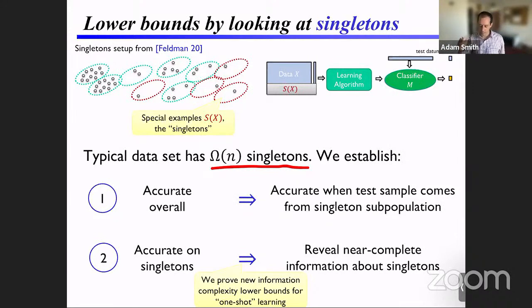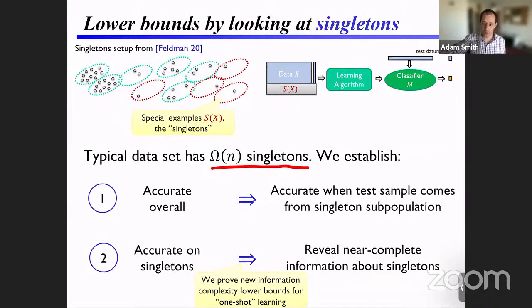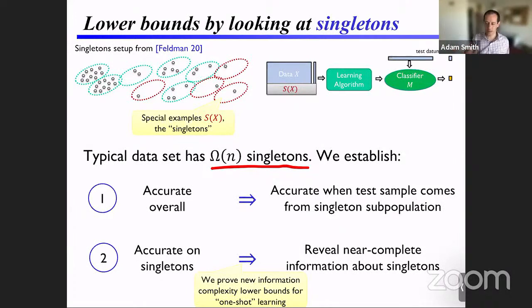To make this work, we need lots of singletons, which means the problem description depends on the amount of data — there's a moving-target phenomenon where the goal posts shift as a function of how much data the algorithm gets. I would argue this is actually a feature of how many modern machine learning problems work: the more data we have, the harder a problem we set out to solve. Once you reach reasonably high accuracy on a task, you move the goal posts and try to solve a harder problem — it's not enough to distinguish cats from dogs; you need to distinguish beagles from German shepherds, or sleeping dogs from running dogs.